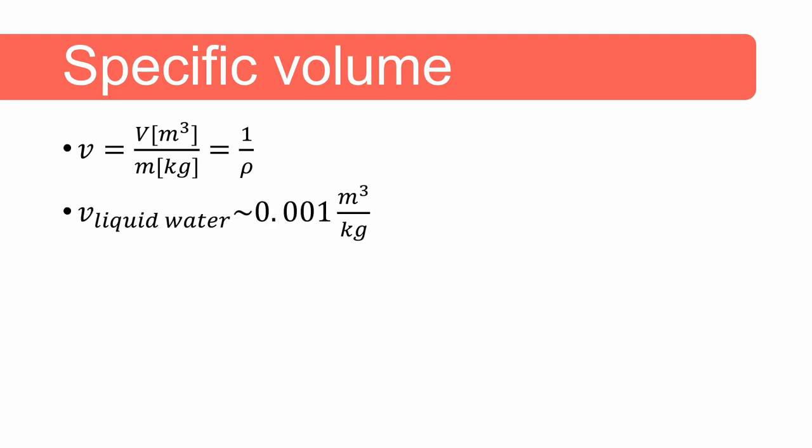The specific volume of liquid water is close to 0.001 cubic meters per kilogram and the specific volume for air is in the order of one cubic meter per kilogram.